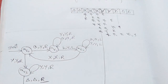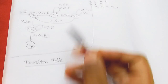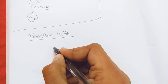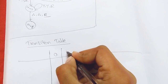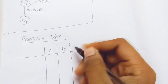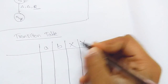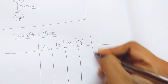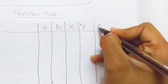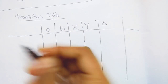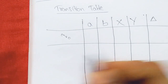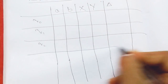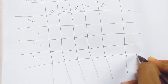Now let's construct the transition table for this Turing machine. We draw columns for all tape characters: A, B, X, Y, and Delta (the blank character). The rows represent states: q0, q1, q2, q3, and qF.